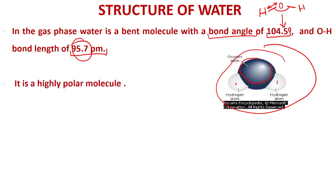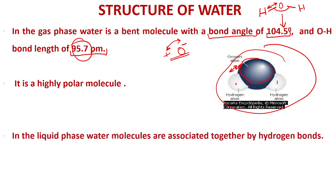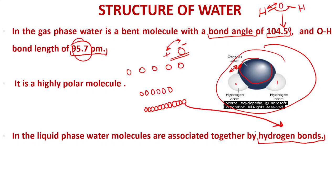Water is a highly polar molecule. The electronegativity of oxygen is higher than hydrogen, so the electron cloud is more towards oxygen, giving oxygen a partial negative charge and hydrogen a partial positive charge — this charge separation makes it a polar molecule. In the liquid phase, water molecules are associated together by hydrogen bonds, which hold them in close proximity.